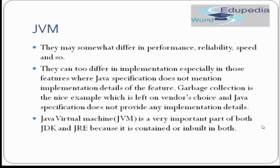Java Virtual Machine is a very important part of both JDK and JRE because it is contained or built into both. So whenever you install something on your system, you must notice that we are either installing a JDK or a JRE — we never install anything as JVM separately. JVM is something that is built into JDK or JRE, so whenever you install any of these, your JVM automatically gets installed on your machine.